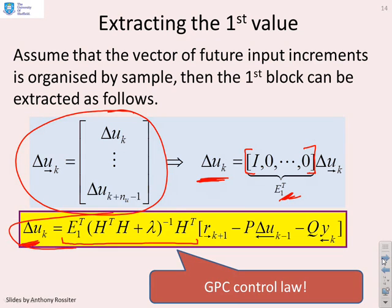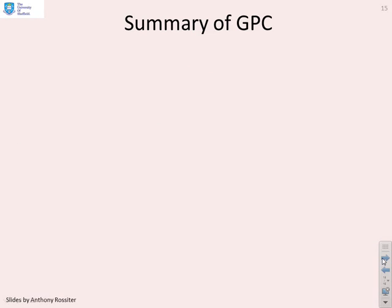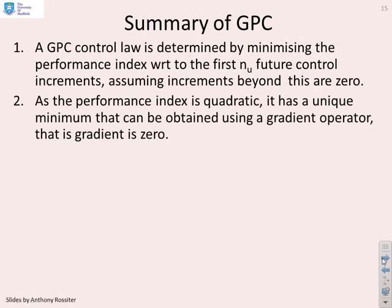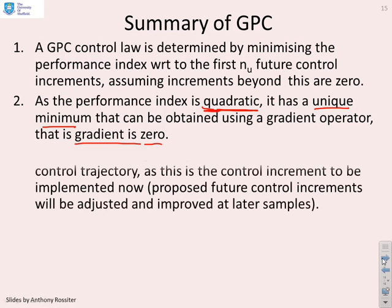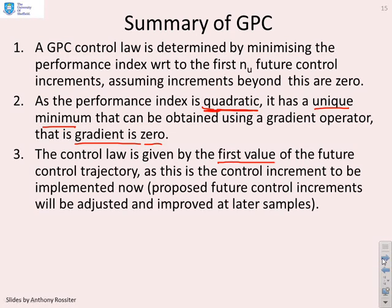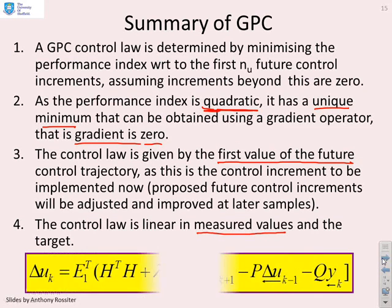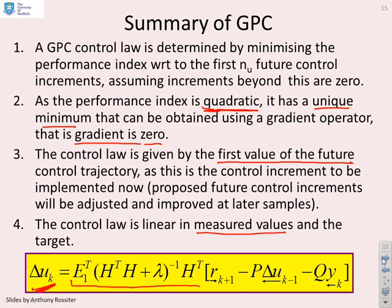In summary, the GPC control law is determined by minimizing the performance index J with respect to the first NU future control increments, assuming increments are zero beyond that point. As the performance index is quadratic, it has a unique minimum obtained by setting the gradient to zero. Only the first value of the future control trajectory is implemented; all others are discarded and recomputed at the next sample. The control law is linear in the measured values and the target: delta_U_K equals a known matrix times future targets, minus P times past inputs, minus Q times past outputs.